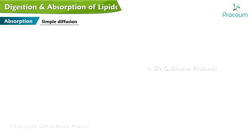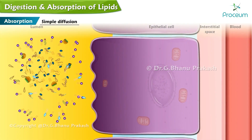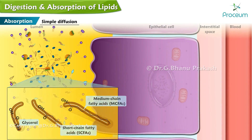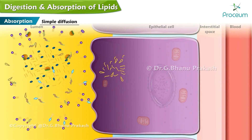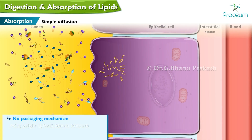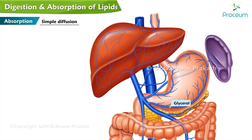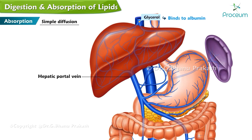Simple Diffusion: When micelles release their fatty contents, smaller molecules such as glycerol, short-chain fatty acids, and medium-chain fatty acids are transported across the apical membrane by simple diffusion. There is no packaging mechanism, as is the case with large-chain fatty acids involving chylomicron formation. These smaller molecules are readily absorbed into the enterocyte, traverse the cytoplasm, and diffuse across the basolateral membrane. Once in the interstitial space, they are rapidly pulled into nearby blood capillaries and released to the hepatic portal vein, entering the general circulation and binding to albumin.